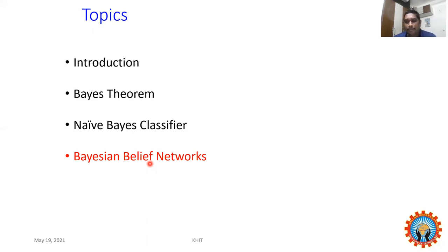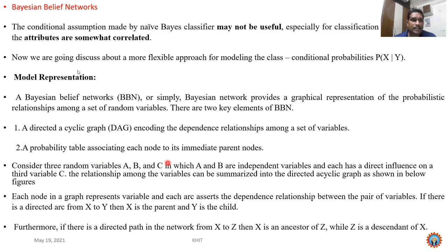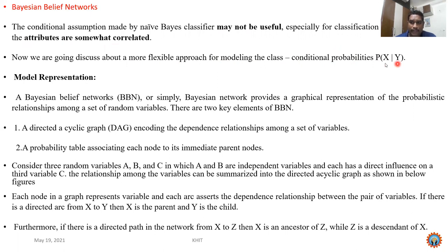Bayesian Belief Networks are a particular procedure or method used to identify when two or more attributes are correlated to each other. The conditional independence assumption made by the Naïve Bayes classifier may not be useful, especially for classification problems in which the attributes are somewhat correlated. We are going to discuss a more flexible approach for modeling the class conditional probabilities P of attributes given a class label.